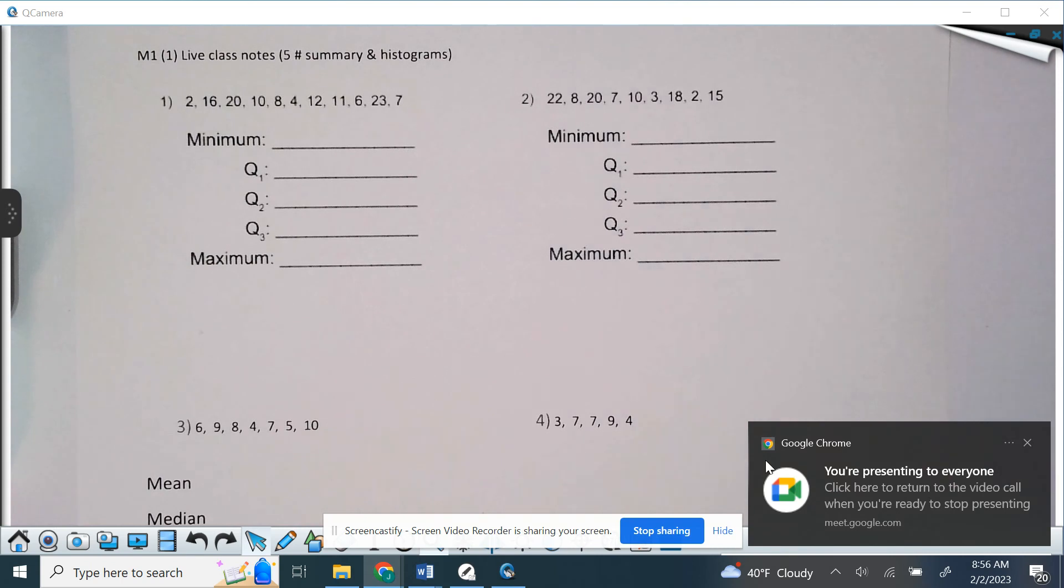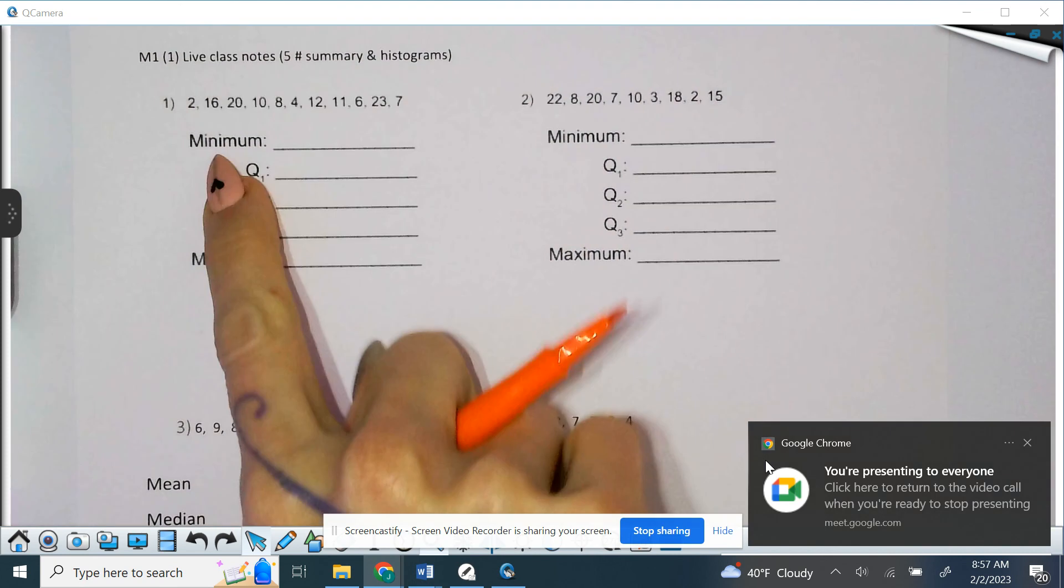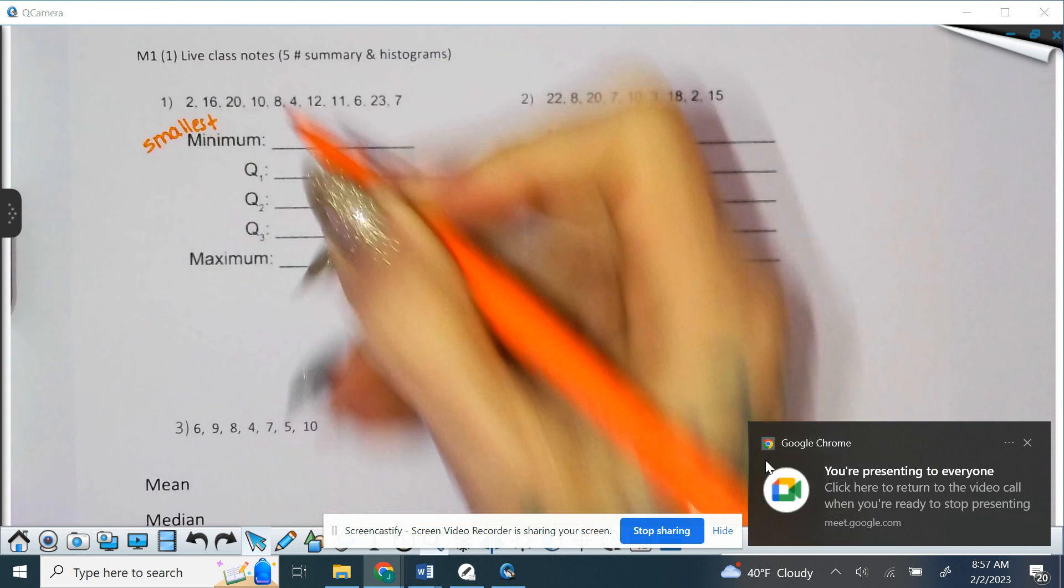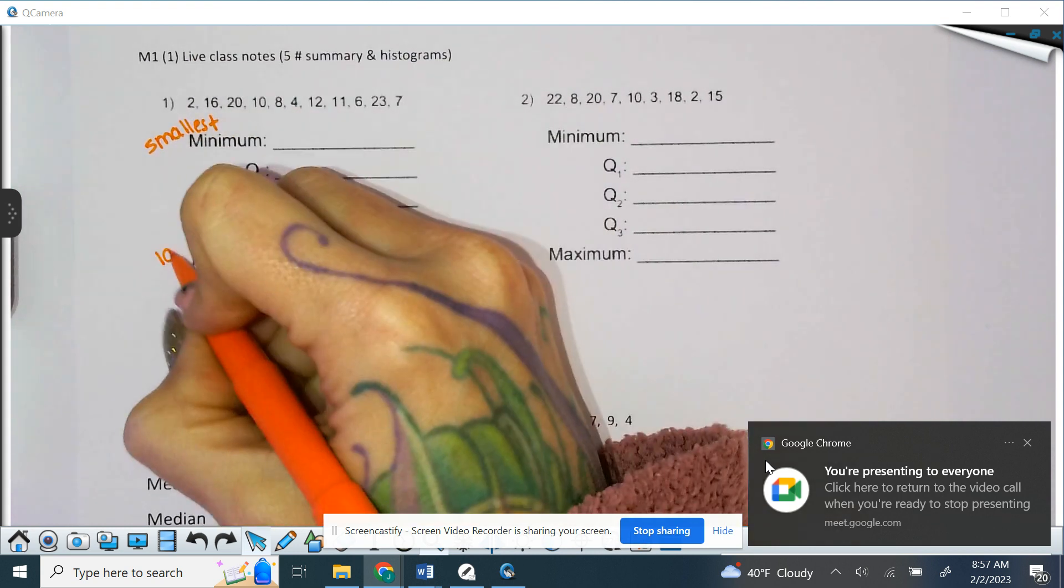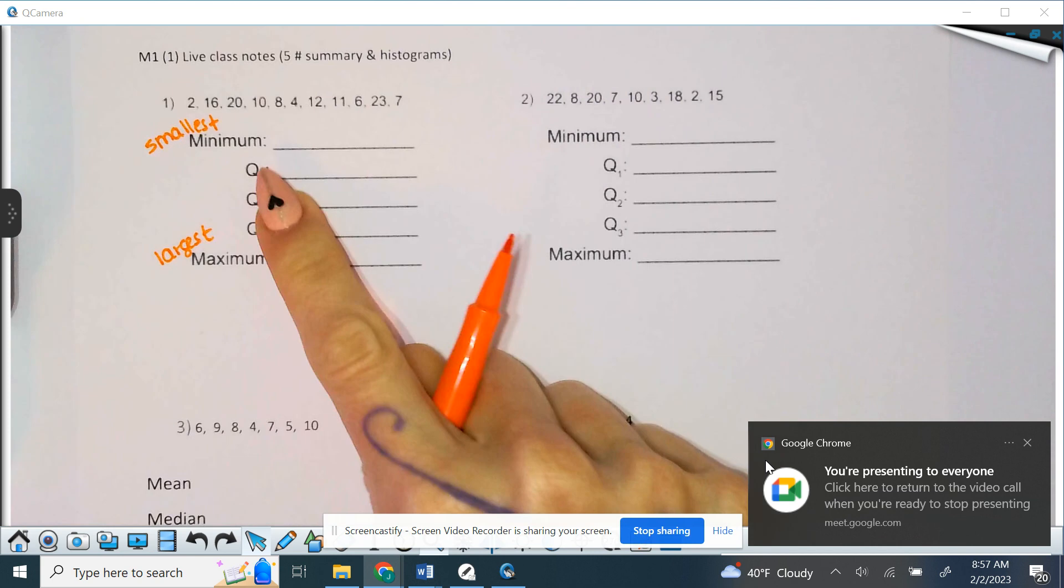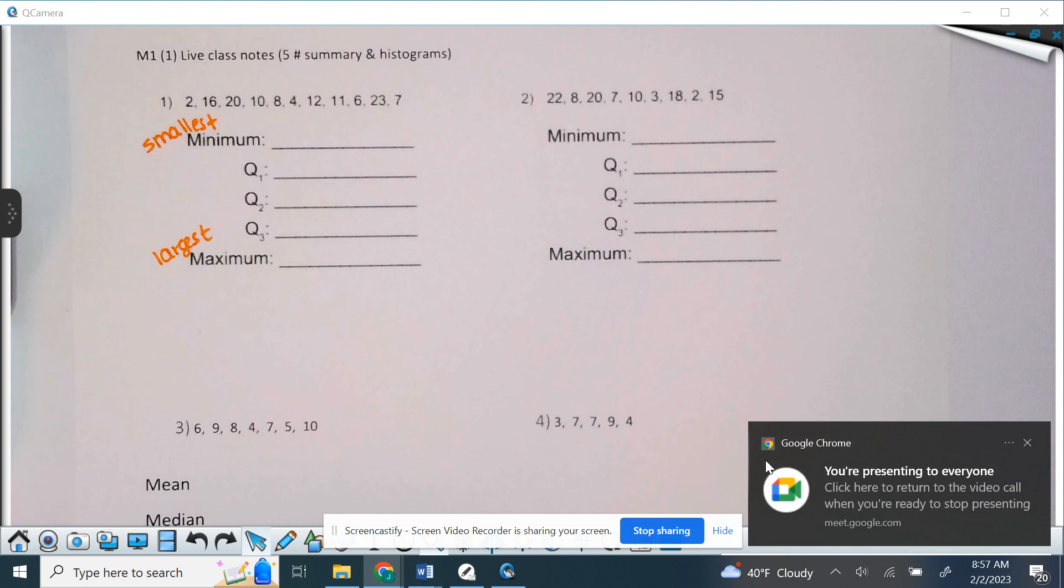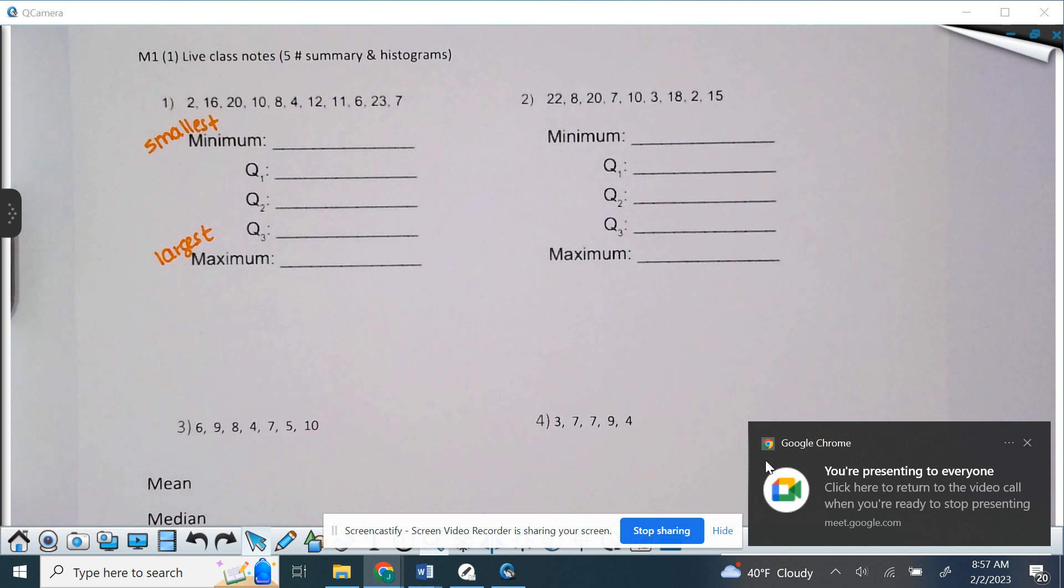Minimum is just, hopefully you guys already know these vocabulary words. Minimum is going to be the smallest number in the list of data. Maximum, obviously, is going to be your largest number. Now, what I would suggest always, and the most common mistakes I've found students make, is just silly errors. Because this is math, this is eighth grade math, if not even middle school math.